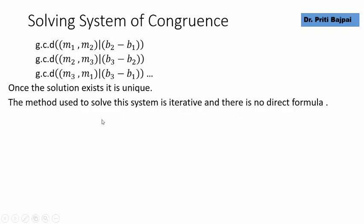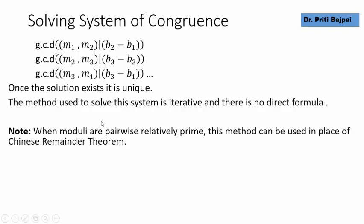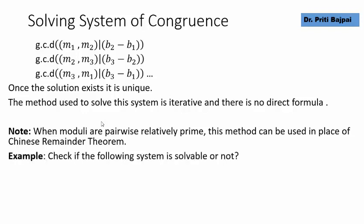When the moduli are pairwise relatively prime, this iterative method can always be used in place of the Chinese Remainder Theorem. Let's check two questions to see whether the system is solvable or not, and then we will start solving these problems.